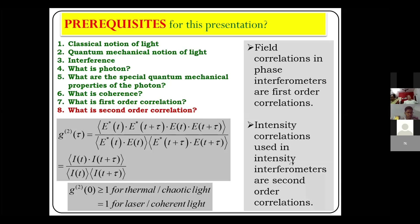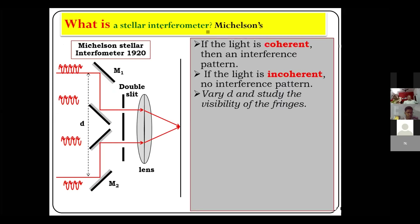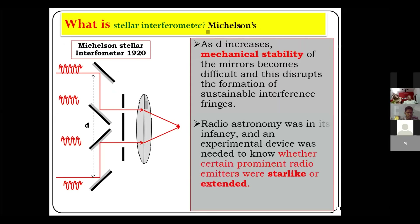I would skip this slide which deliberates how Michelson's interferometer works. There was an issue with Michelson's stellar interferometer: if we increase the separation between the outer mirrors (shown as d here), the mechanical stability of the mirrors becomes difficult. This disrupts the formation of sustainable interferometer fringes. Since this is based on observing the visibility of fringes, Michelson's stellar interferometer does not remain as effective.